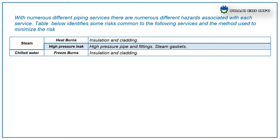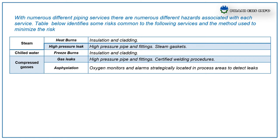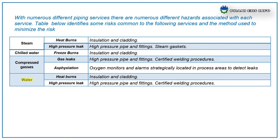For chilled water lines, the possible risks are frostbite burns. When working at chilled water lines, ensure that lines are insulated and cladding is provided. For compressor gases, the possible hazards are gas leaks and asphyxiation. Control measures include high pressure pipe fittings, certified welding procedures, and oxygen monitors and alarms strategically located in process areas to detect leaks. For water lines, hazards include heat burns from hot water lines and high pressure leaks. Control measures are insulation and cladding, high pressure pipes and fittings, and certified welding procedures.